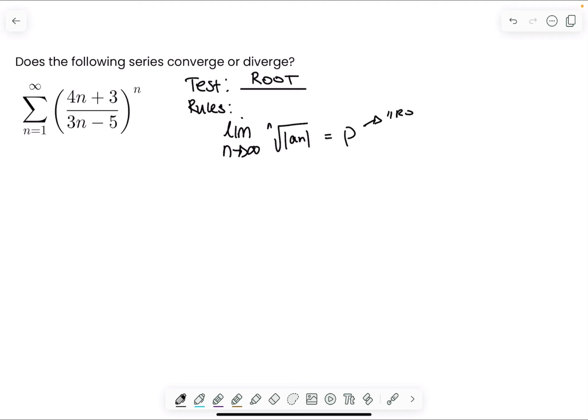And then the rules are the same as the ratio test. If rho is less than 1, the series converges absolutely. If rho is greater than 1, it diverges. If rho is equal to 1, the test is inconclusive, meaning try another test.